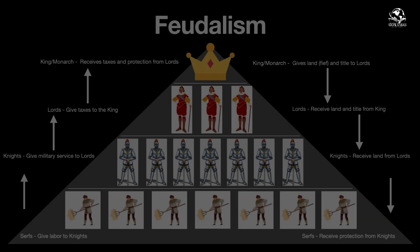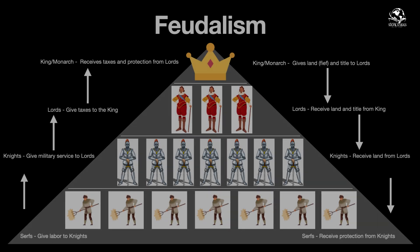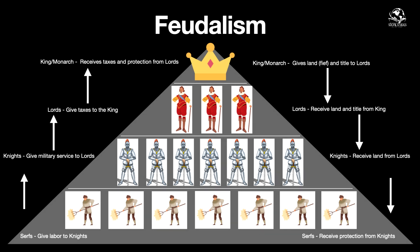The feudal organizational chart shows how their class system is set up. At the top you have the king, represented by the crown. He has lords below him who he gives land to - titles like duke, duchess, baron, baroness - and below them they have knights who fight.